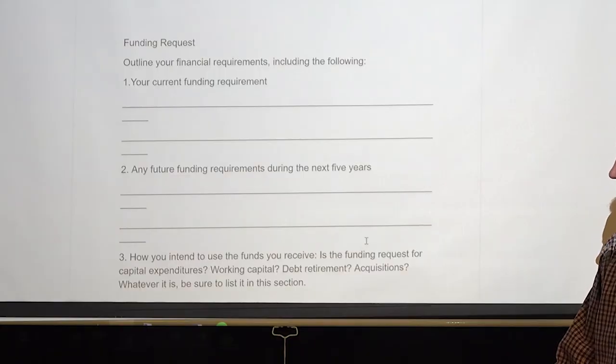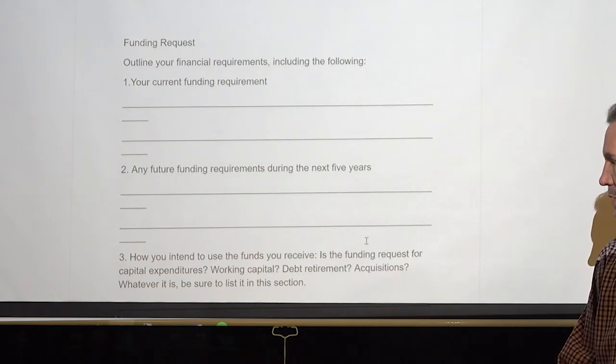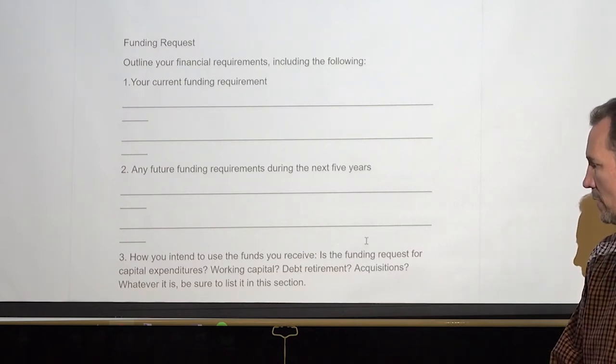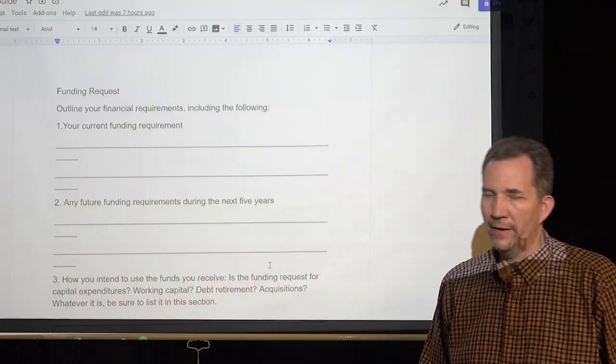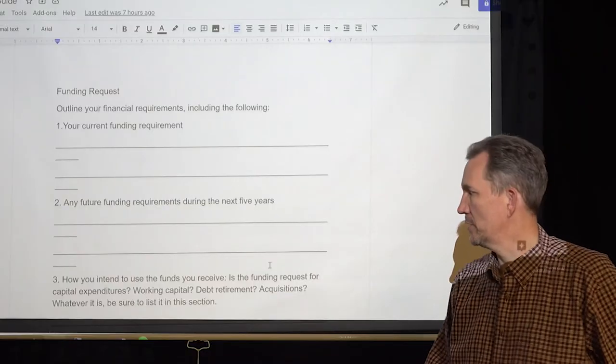And then it says how you intend to use the funds you receive is the funding request for capital expenditures, working capital, debt retirement, acquisitions, whatever it is, be sure to list this in this section. All right, so this is a serious accounting section again here.